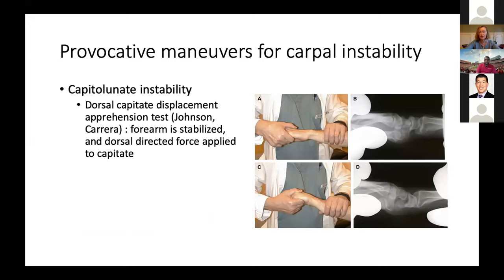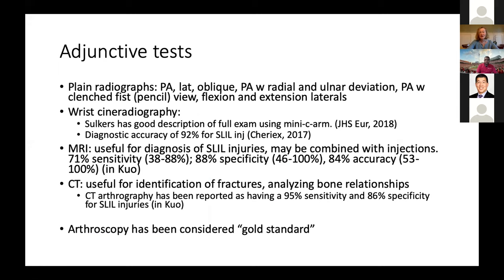Capitolunate instability is quite rare — the apprehension test is appropriately named because the patient doesn't want you to do it. By stabilizing the forearm and applying dorsal-directed pressure, the capitate will pop out of the lunate facet. For adjunctive tests, x-rays are adequate for the vast majority of patients. Get a series of plain films: PA, lateral oblique, PA with radial and ulnar deviation, a clenched fist view, and flexion-extension laterals. Wrist cine radiography with a mini C-arm is quite helpful as you can do it in the office and compare to the other side.